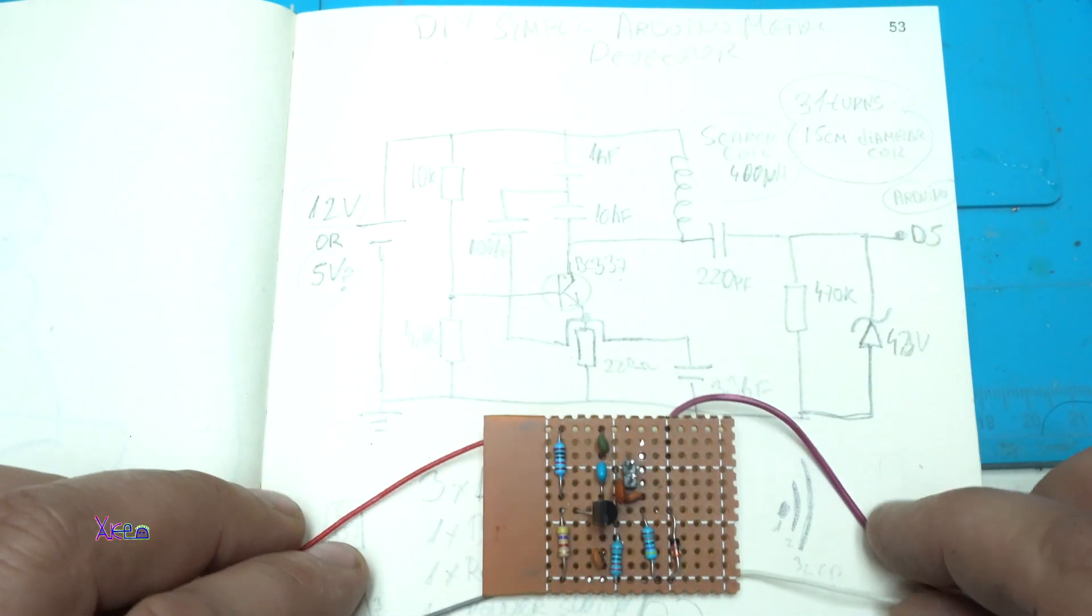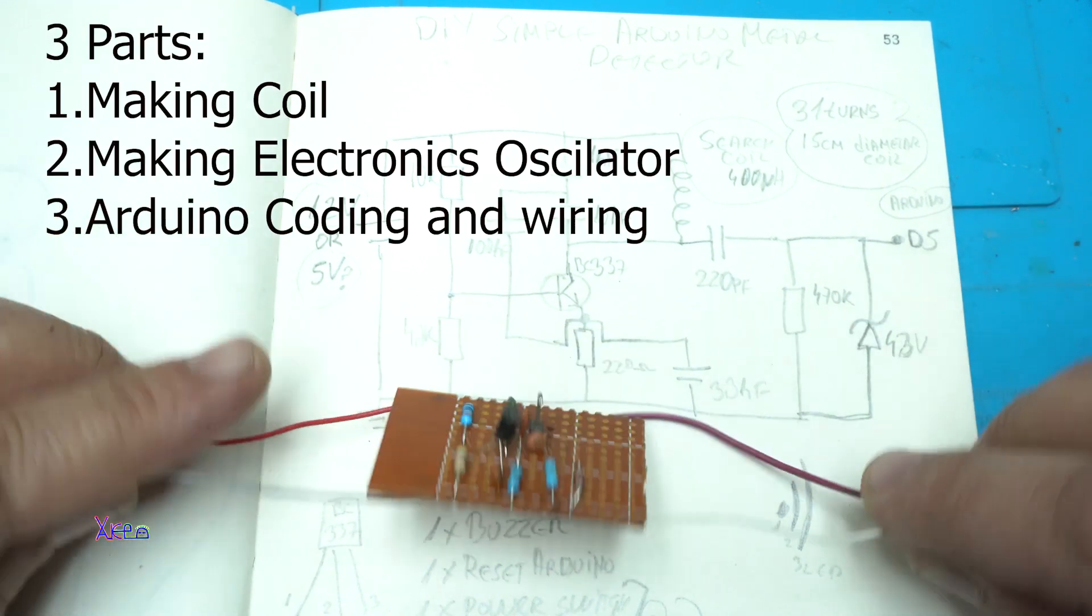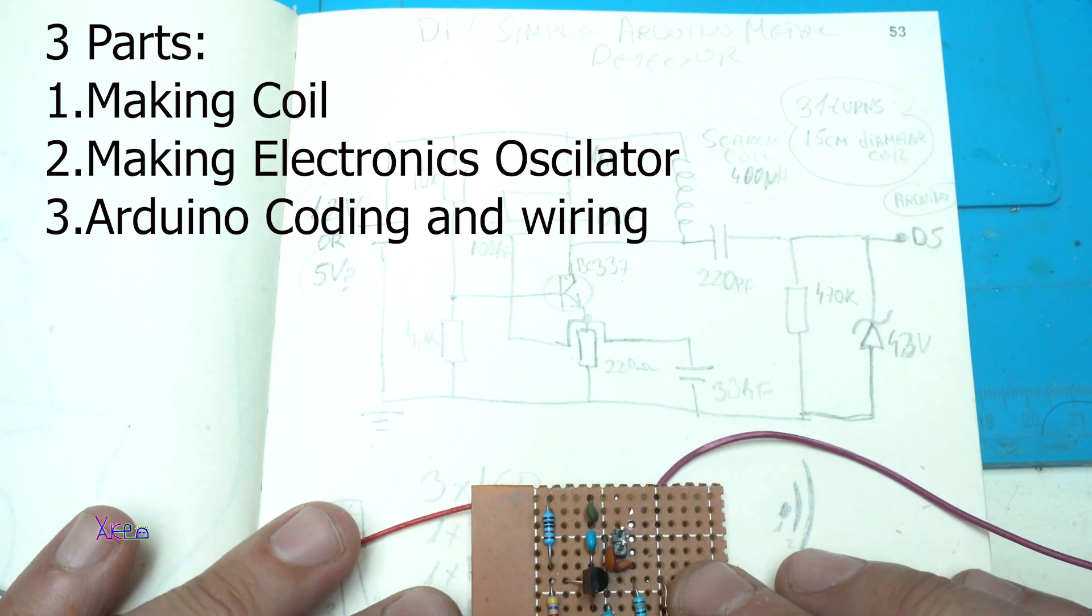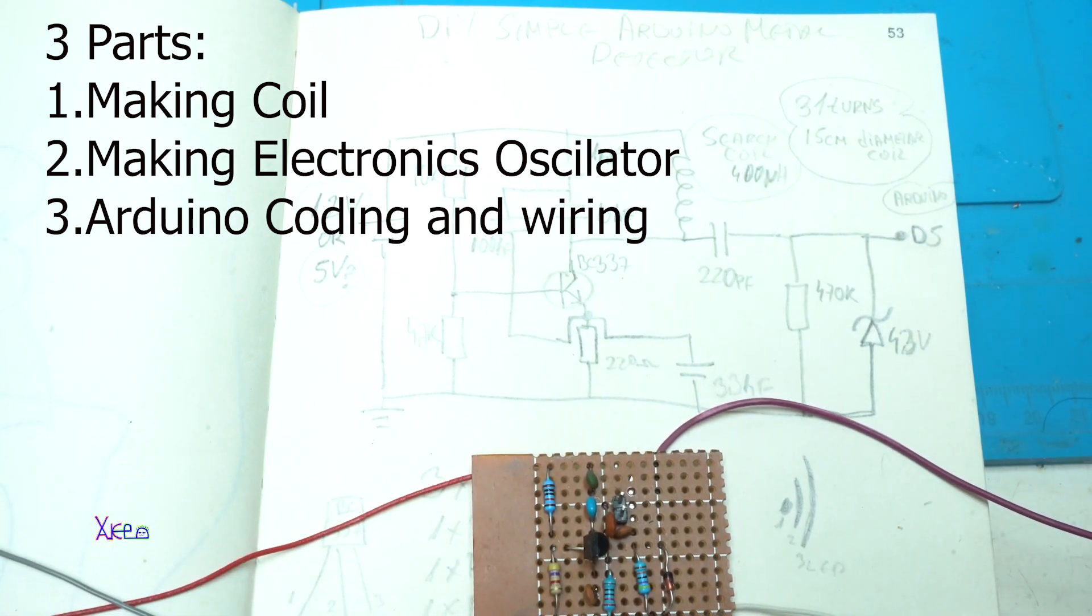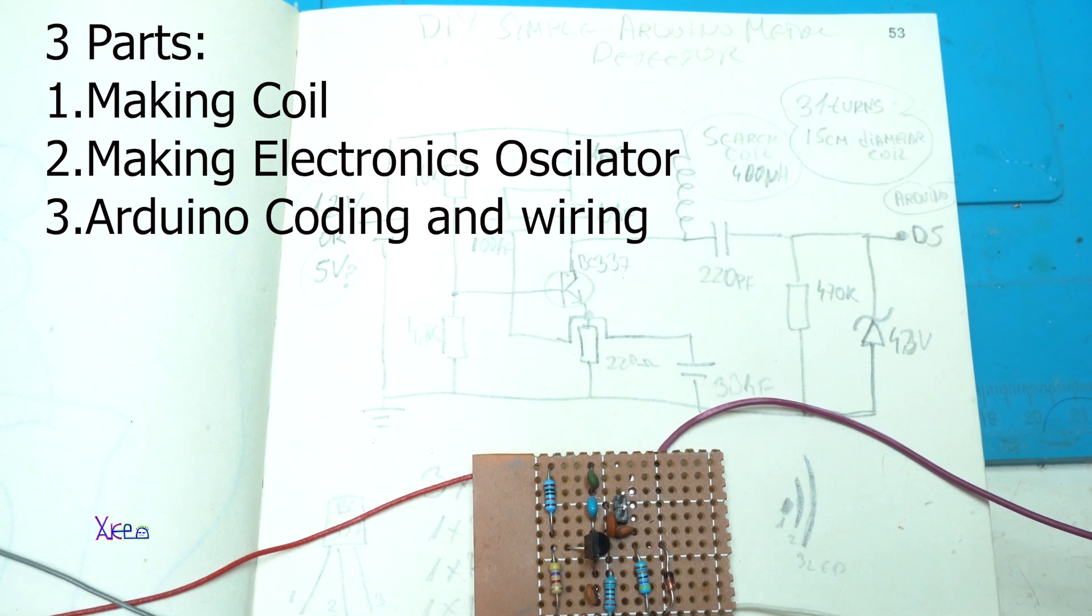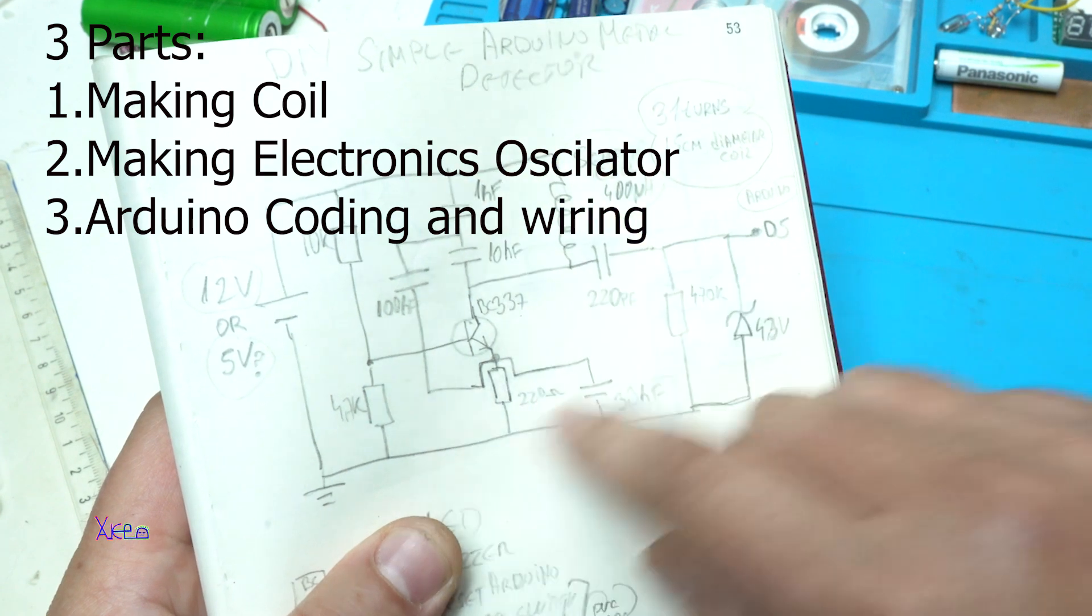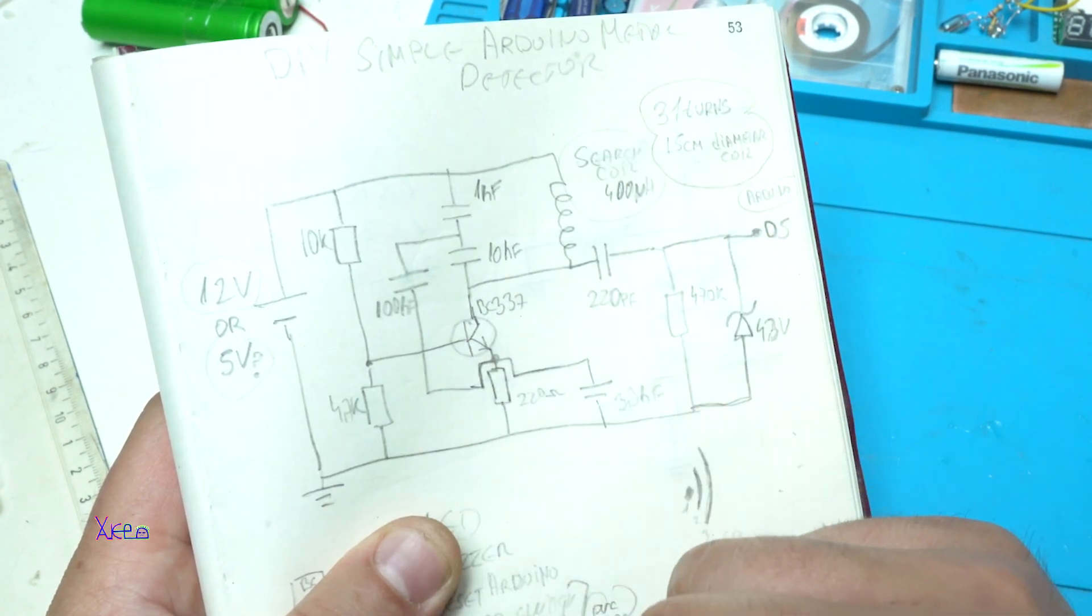This project we're gonna split into three parts. The first part is making the searching coil, second part is making the homemade electronic board with a couple of resistors, one transistor, three LEDs, buzzer and so on. And the third part is programming the Arduino board with the code and that's it.